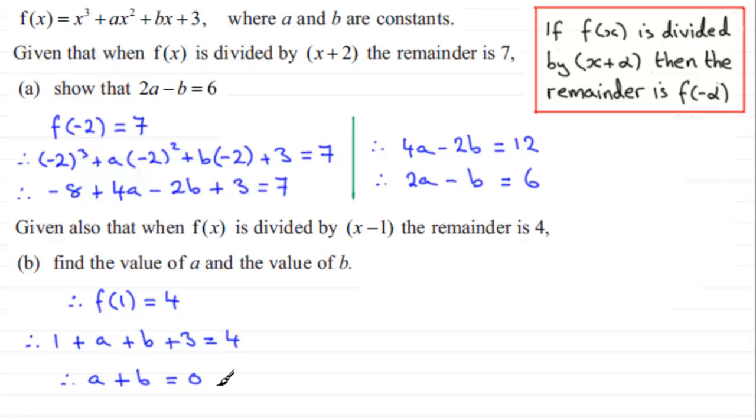So we now have two equations in a and b, so it's going to be a case of doing simultaneous equations. What I'm going to do is just number these equations - we'll call this one equation 1 and we'll call this one that we just found equation 2.